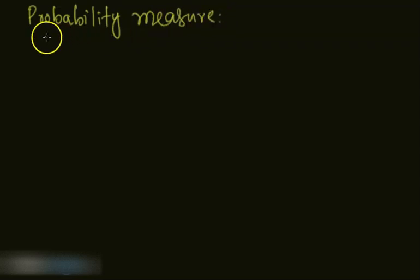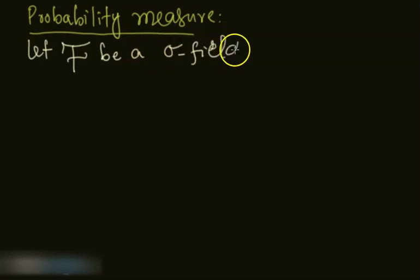Bismillahirrahmanirrahim, assalamu alaikum. Let's define probability measure. Let calligraphic F be a sigma field. Sigma field is defined in the previous video. Let calligraphic F be a sigma field on sample space omega.